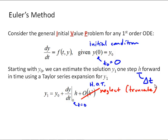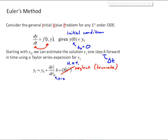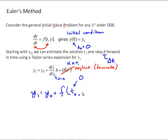Now we can develop a method because we know that dy/dt is equal to whatever function is defining our differential equation. So we can solve for y1, which equals y0 plus that function evaluated at t0 — which in this case is equal to 0 — and y0.